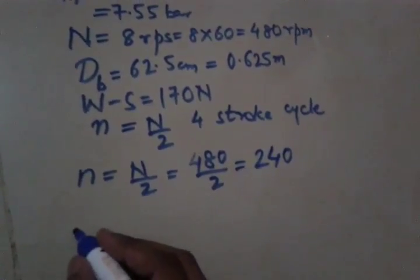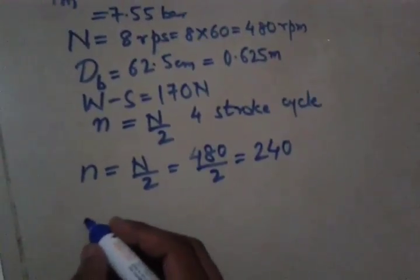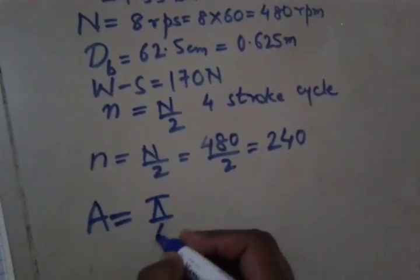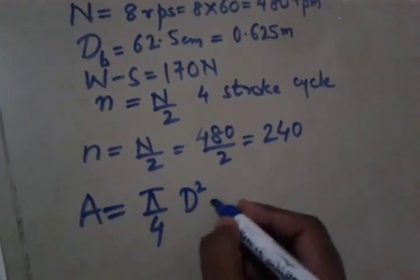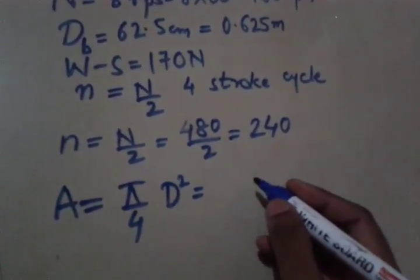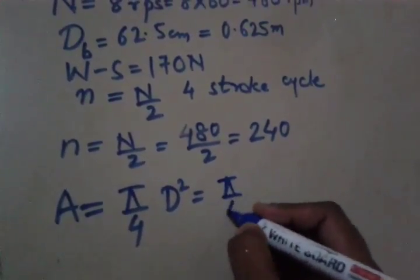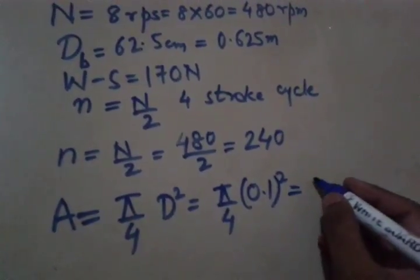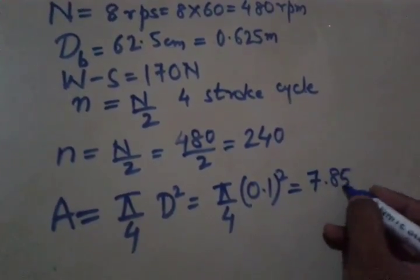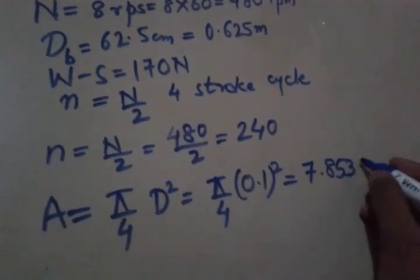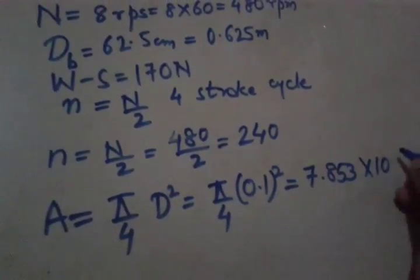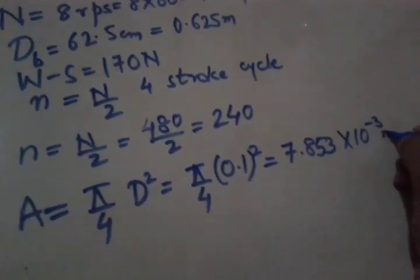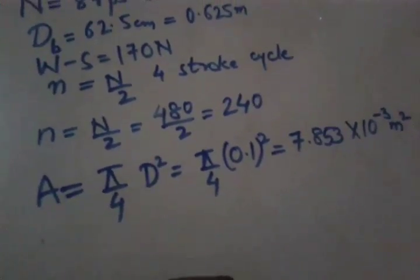Now, first we will calculate the area of cylinder. So area will be pi by 4 D square and D we have calculated as 0.1 meter. So pi by 4 into 0.1 square, so here we got it as 7.853 into 10 raised to minus 3 meter square.